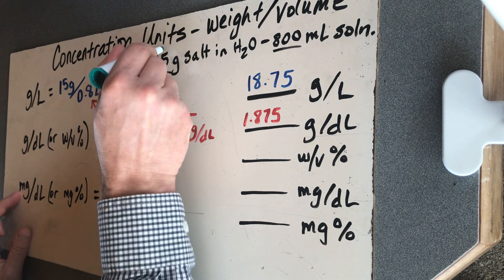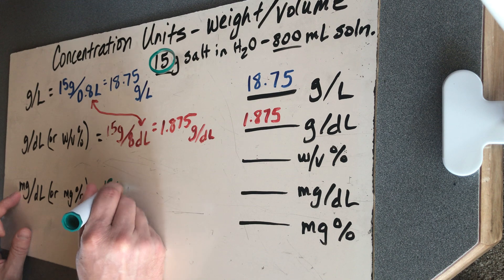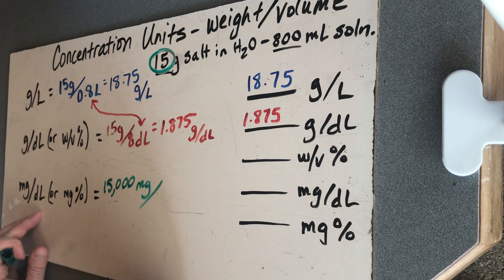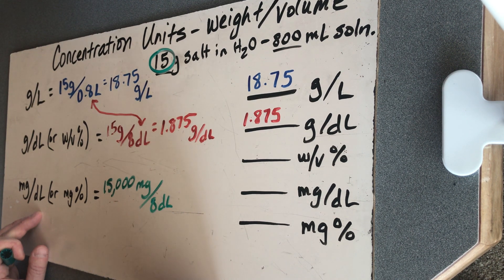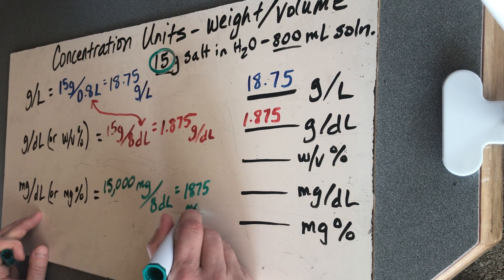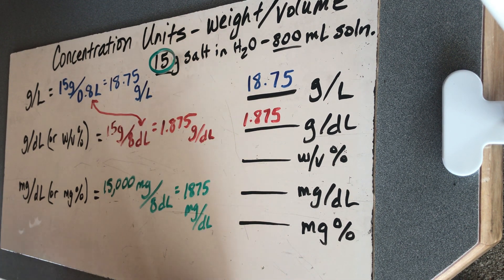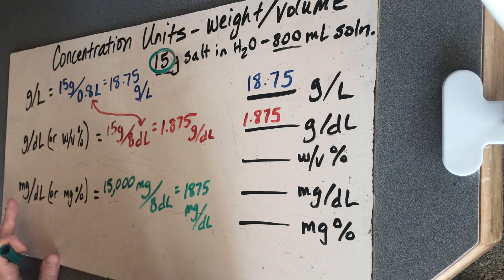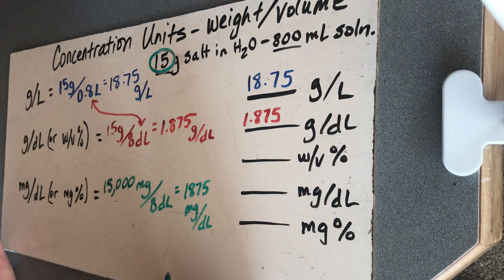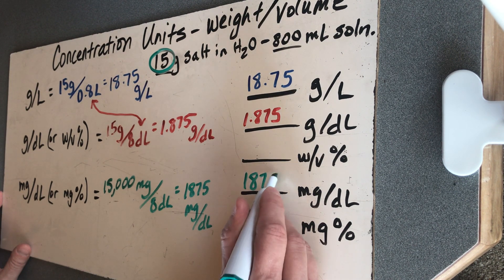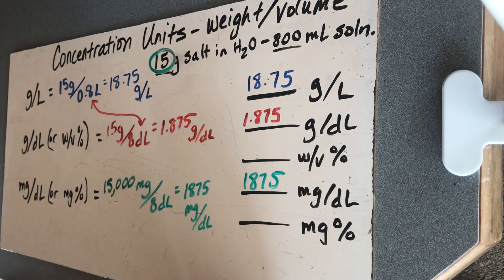So milligrams. This is 15,000 milligrams. And I divide that by 8 deciliters, and I get a really big number. I get 1,875 milligrams per deciliter. And that's a pretty big value. Like I said, this would be much more reasonable if I had an extremely diluted solution. This one's kind of an averaged solution, and so these may not be appropriate units, but we still have to learn how to use them. So 1,875 milligrams per deciliter.